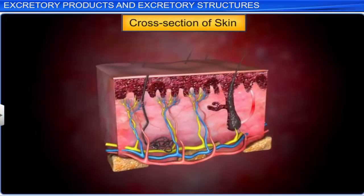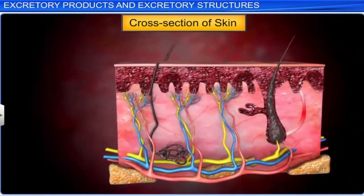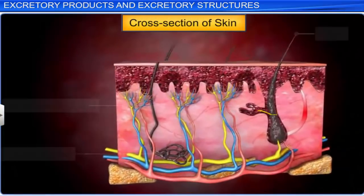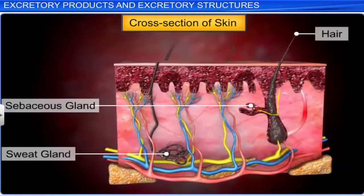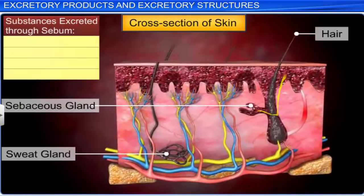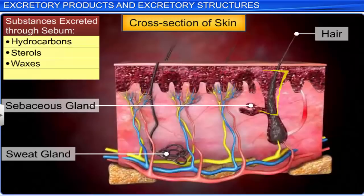Our skin has sebaceous glands that secrete sebum, through which substances like hydrocarbons, sterols, and waxes are excreted. This secretion however provides a protective oily covering for the body.